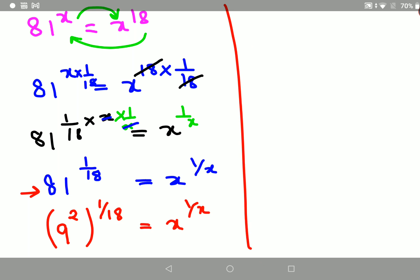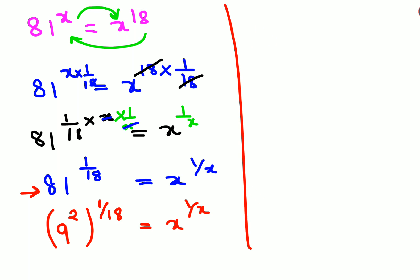Next what we can do is, in indices it's very clear that there is a rule which says a raised to m, the whole raised to n, can be written as a raised to m into n.